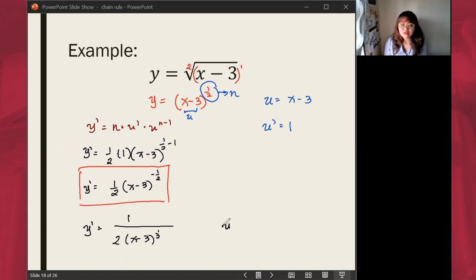And then this could be simplified further and returned to its original expression in radical form. You change the expression raised to one-half to a radical. You'll get 1 over 2 times the square root of x minus 3.